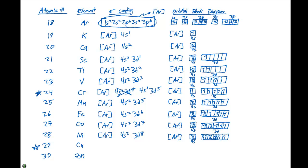Copper is another one of our exceptions. Copper is not going to be 4s2, 3d9. Instead, it's gonna be 4s1, 3d10.